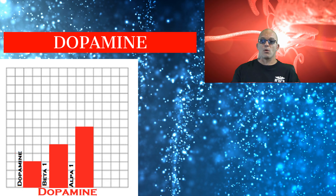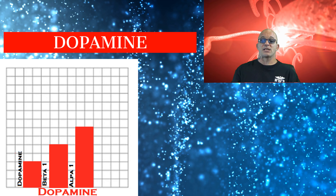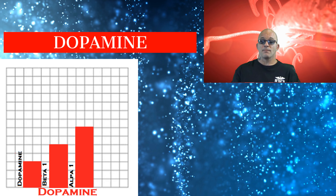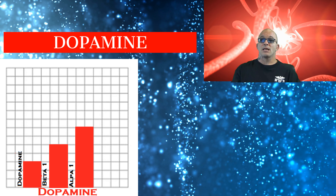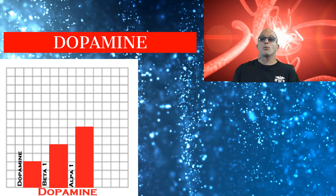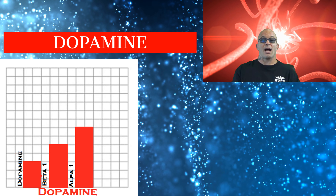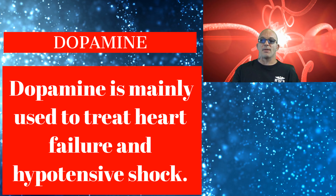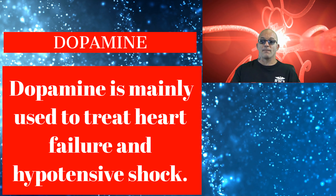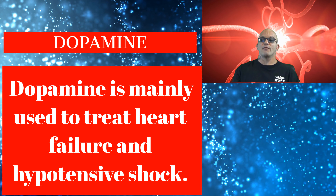The third catecholamine, dopamine, stimulates both alpha and beta receptors and dopamine receptors depending on the given dose. At low therapeutic levels, it only acts on dopamine receptors. With higher levels, it will act on beta-1 receptors, and at even higher levels will act on alpha-1 receptors. Dopamine is mainly used to treat heart failure and hypotensive shock. More about dopamine receptors will be discussed in future videos.